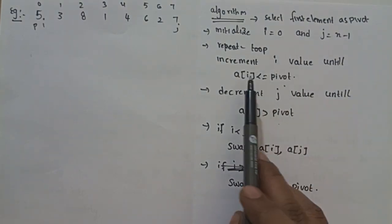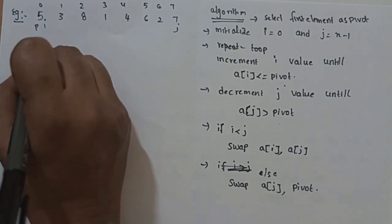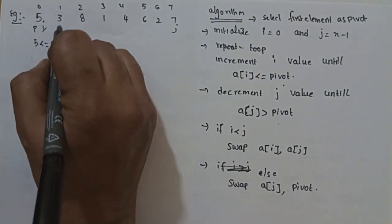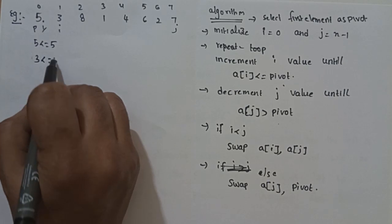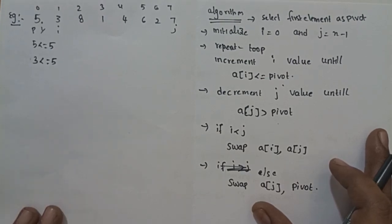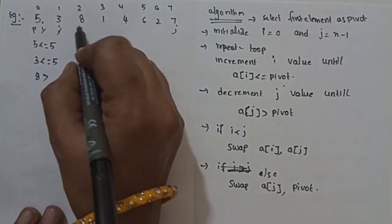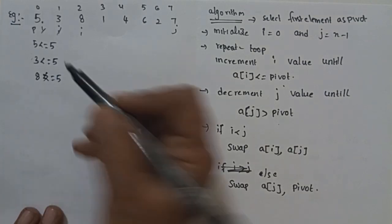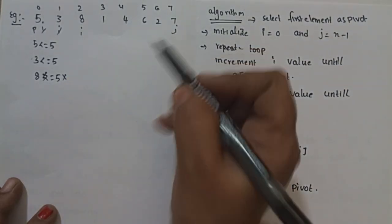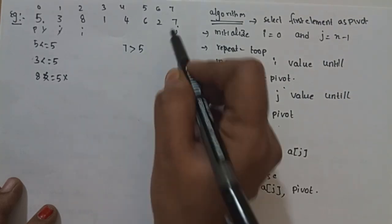Starting the process: a[i] at index 0 is 5, pivot is 5. 5 less than or equal to 5 — condition true, so increment i. Next, a[i] is 3, 3 less than or equal to 5 — condition true, increment i. Next, a[i] is 8, 8 less than or equal to 5 — condition false, so we stop incrementing i.